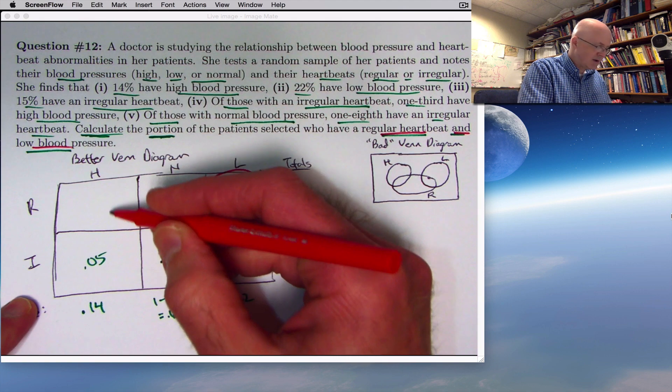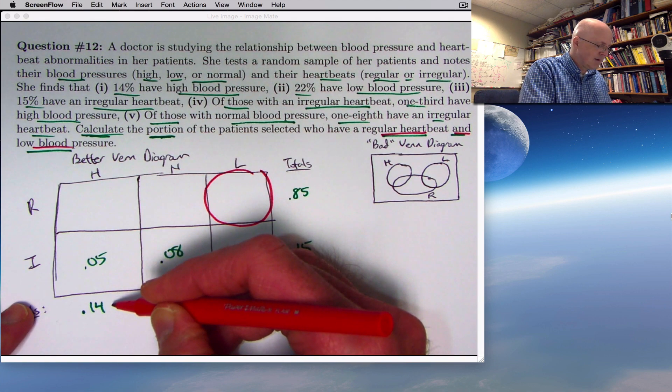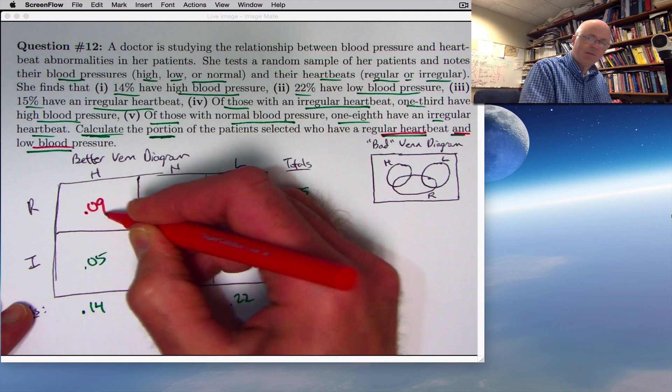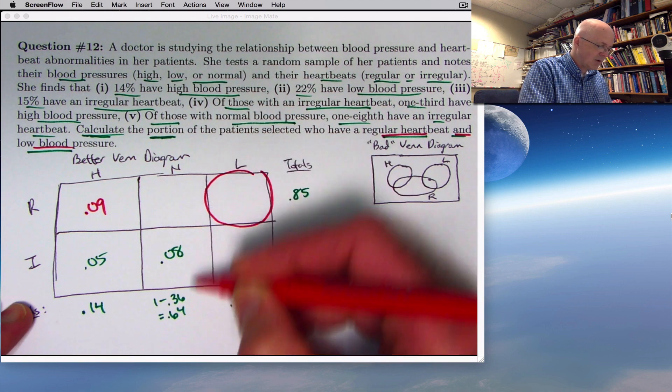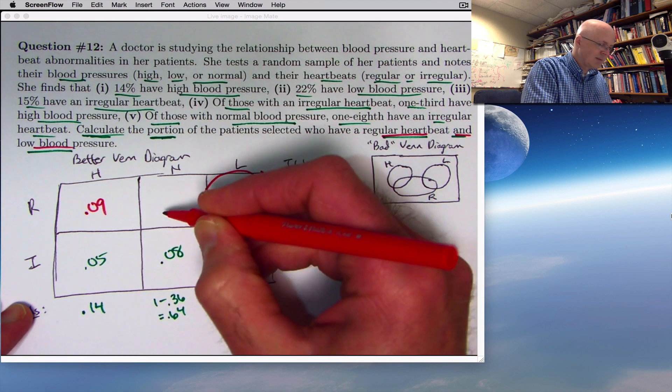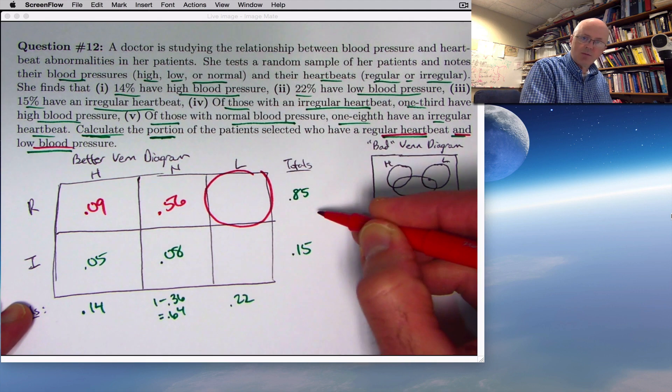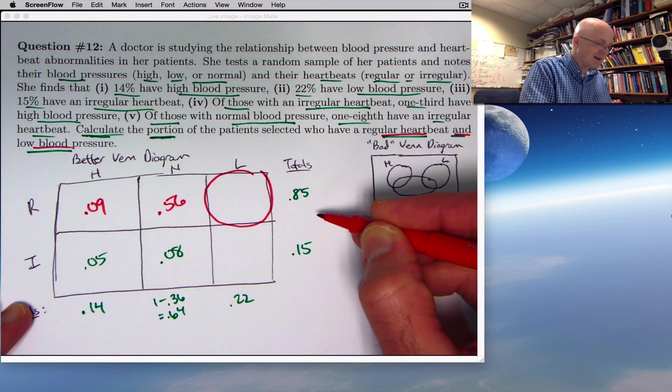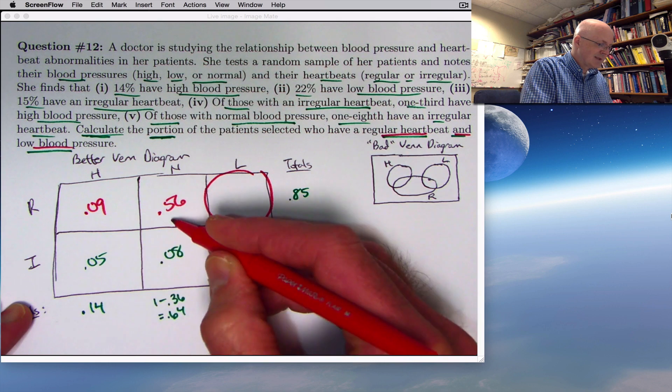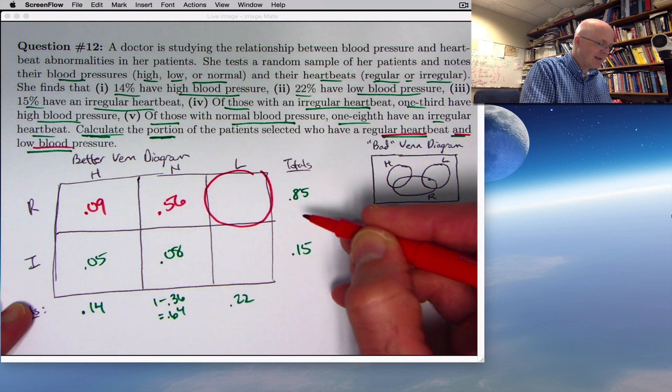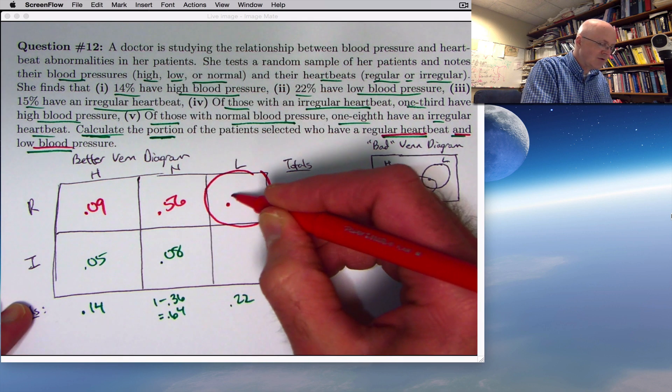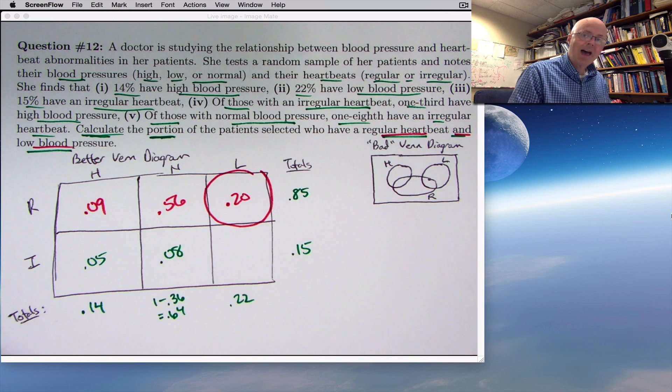Think about it. These two numbers have to total to 0.14, so this must be a 0.09. These two numbers have to total to 0.64, so this must be a 0.56. And these three numbers must total to 0.85. We're almost done. This plus this is 0.65. Take that away from 0.85, you get 0.2 or 0.20. That is the answer to the question.